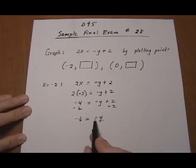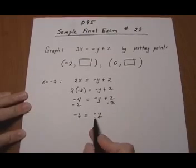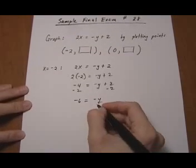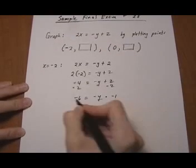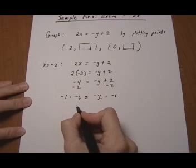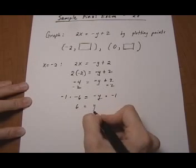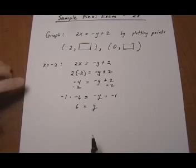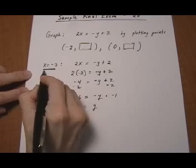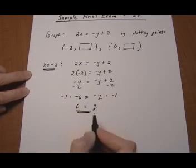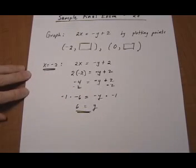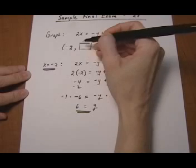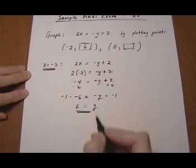Minus 6 equals minus y, and now we need to get rid of the minus sign, so we divide both sides by a negative or multiply by a negative, either way. That gives us a positive 6 equals y. Now that specific y value goes with that specific x value. They are an ordered pair, so when x is minus 2, y is 6.